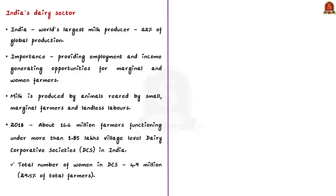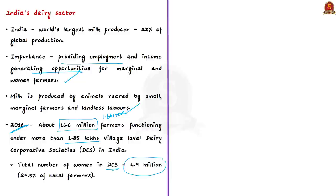Most milk in India is produced by animals reared by small and marginal farmers and landless laborers, including women. As of 2018, about 16.6 million farmers have been functioning under dairy cooperative societies in India, with more than 1.85 lakh village-level dairy cooperative societies. Women members are encouraged to assume leadership roles in these societies. As of 2018, the total number of women in dairy cooperatives was around 49 lakhs, constituting 29.5% of total dairy farmers. Recent estimates suggest more than 1.9 lakh dairy cooperative societies with nearly 6 million women members.